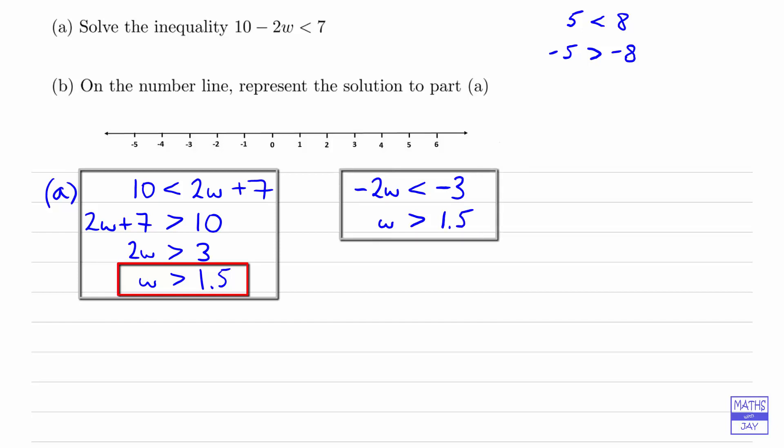So this second method is a much faster way of getting the answer, but you're more likely to go wrong if you forget about changing the direction of the inequality.